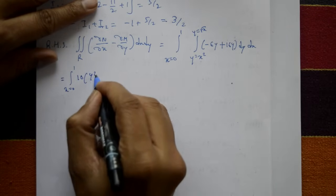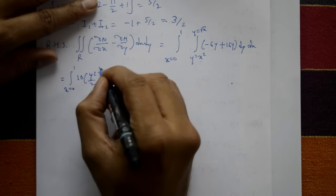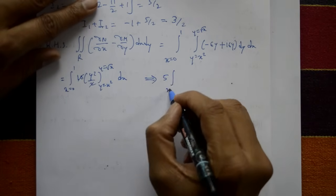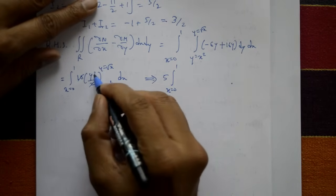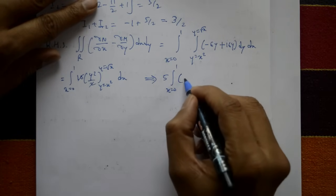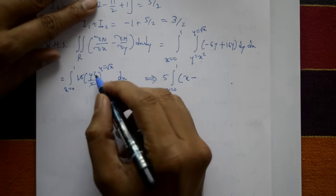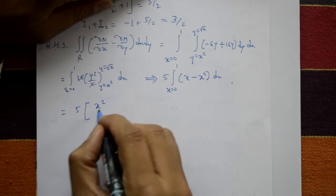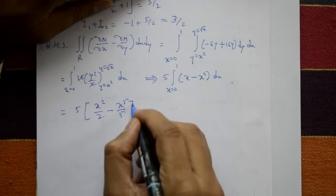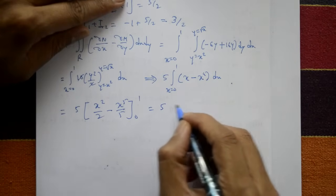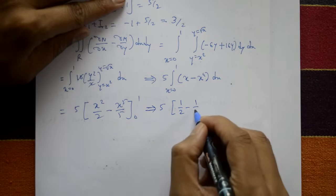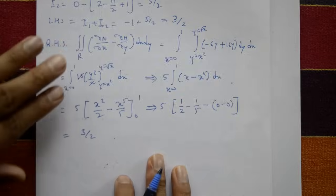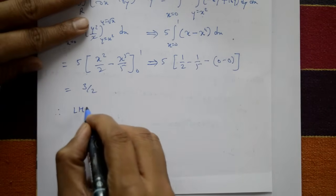RHS = ∫₀¹ ∫_{x²}^{√x} 10y dy dx. Integrating with respect to y: [5y²] from y = x² to y = √x gives 5(x − x⁴). Then integrating with respect to x: 5∫₀¹(x − x⁴)dx = 5[x²/2 − x⁵/5]₀¹ = 5(1/2 − 1/5) = 5·(3/10) = 3/2. Therefore RHS = 3/2 = LHS. Green's theorem is verified.